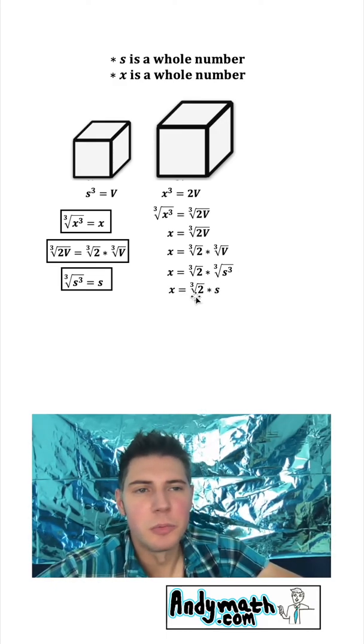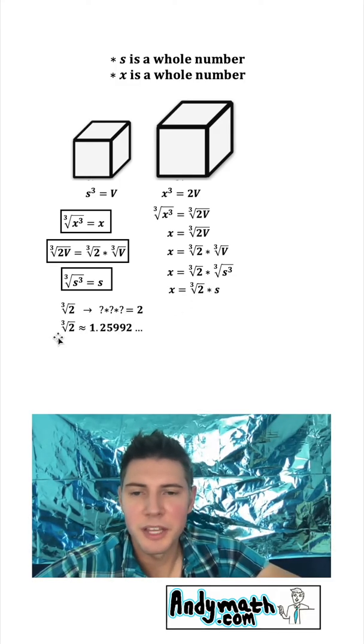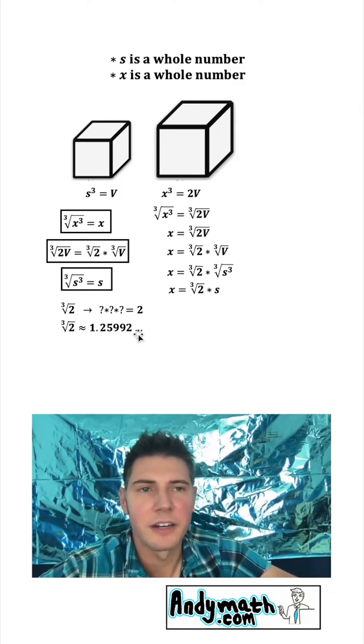Now what is the cube root of 2? Well, what it means is that something times something times something is going to equal 2. What that ends up being is an irrational number that is approximately 1.25992. It's irrational.